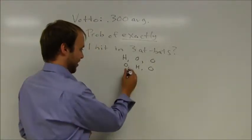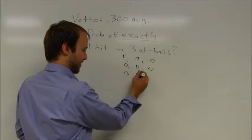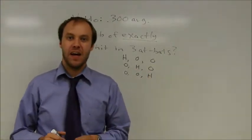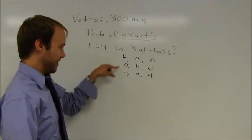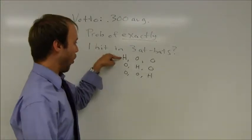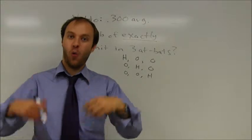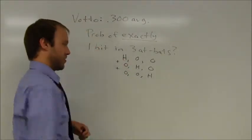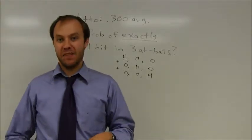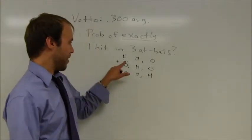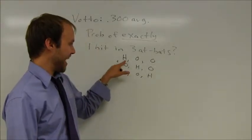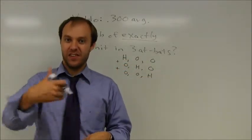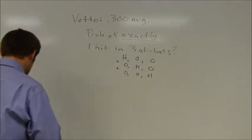Or he could make an out in the first two at-bats and he could get a hit in the last at-bat. Notice that there are three different things that can happen here. It's this or this or this. Remember that OR problems mean that you're going to be adding those totals together. Now within each of these, I want to find the probability of a hit and an out and an out. ANDs suggest I'm going to multiply.